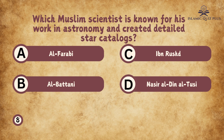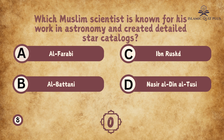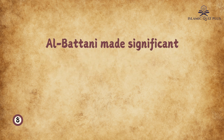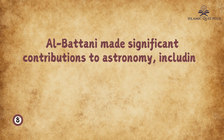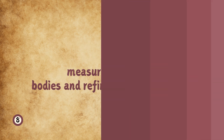Question 8: Which Muslim scientist is known for his work in astronomy and created detailed star catalogues? A. Al-Farabi, B. Al-Batani, C. Ibn Rushd, D. Nasir al-Din al-Tusi. The correct answer is B. Al-Batani. Al-Batani made significant contributions to astronomy, including precise measurements of celestial bodies and refining earlier models.